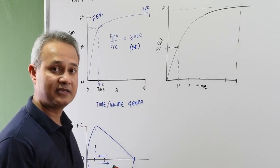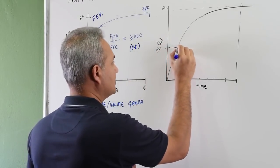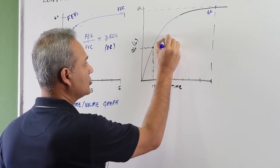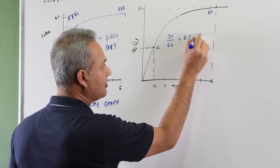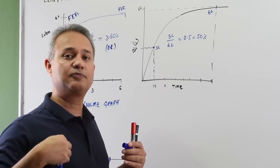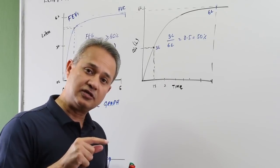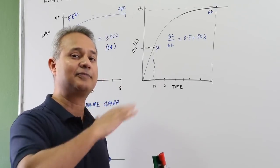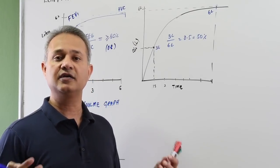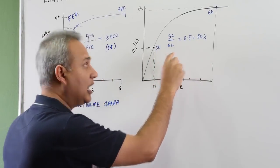Anything less than 70% indicates obstructive disease. For example, if this patient is expelling about three liters in the first second and total expulsion is six liters, then FEV1 over FVC equals 3/6 = 0.5 = 50%. This means there is obstruction to the movement of air out. This obstruction is in addition to the normal dynamic compression — for example, in emphysema or asthma — and as a result this ratio becomes reduced.